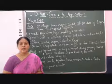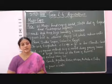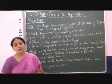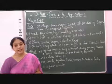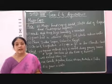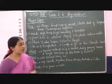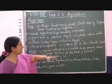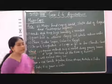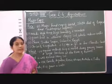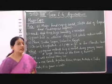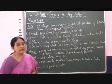Rice grows well in alluvial soil, and China is the largest producer of rice, while India is the second largest producer. Apart from China and India, other countries which grow rice are Japan, Sri Lanka, and Egypt. In West Bengal and Bangladesh, if the climate is favourable, two to three crops of rice can be grown in a year.